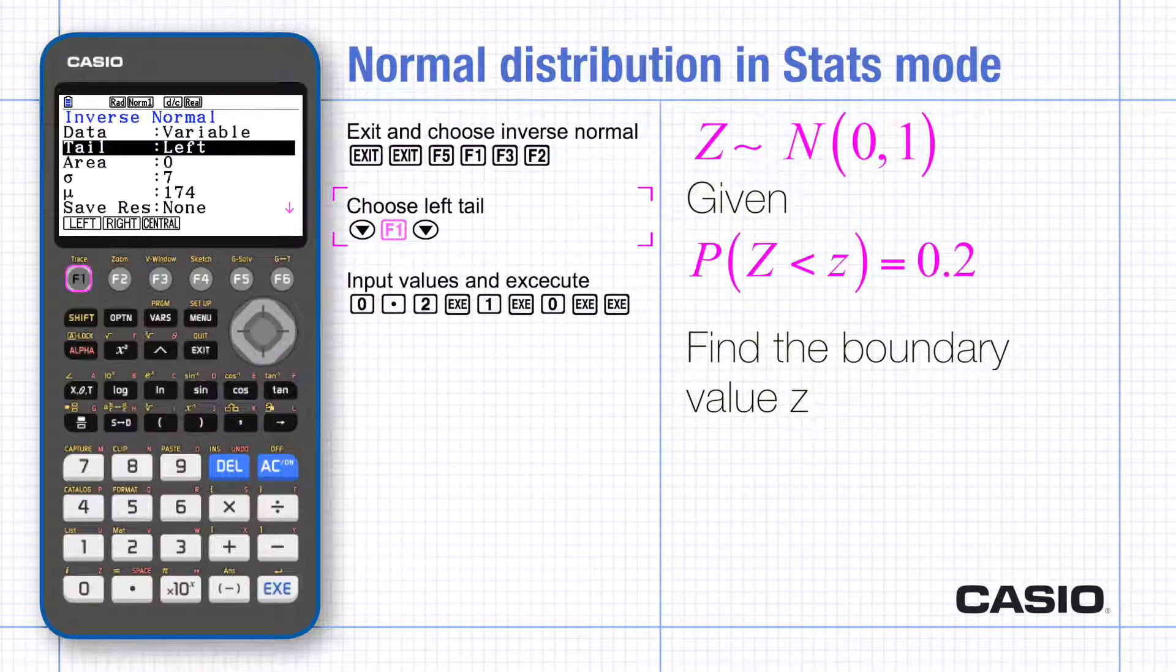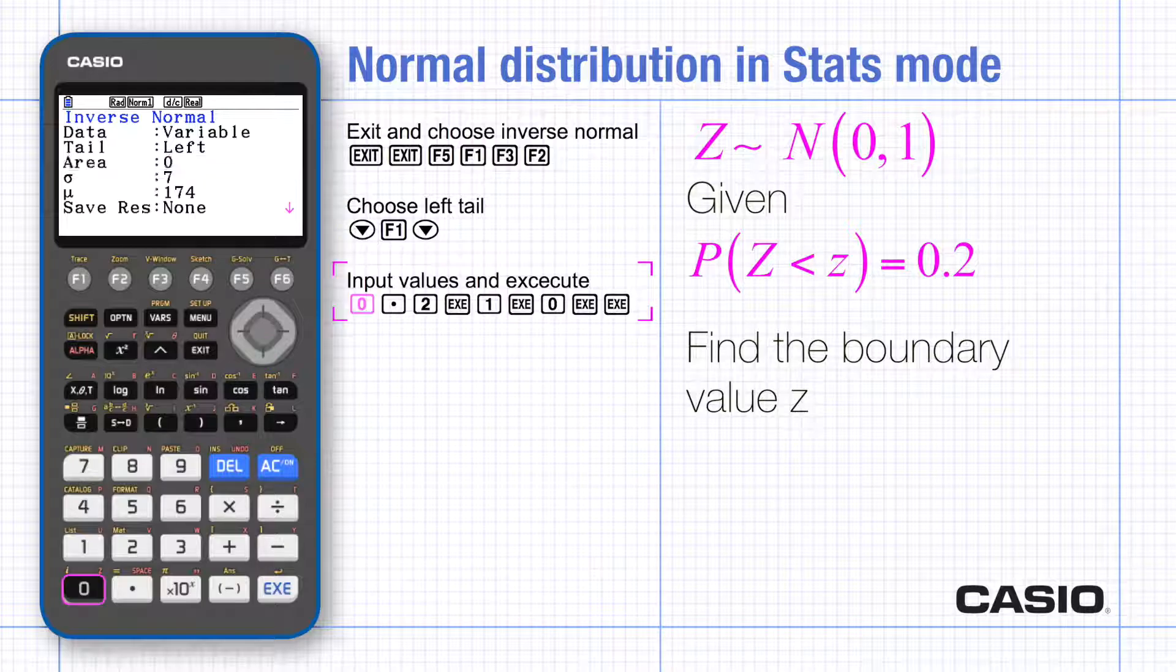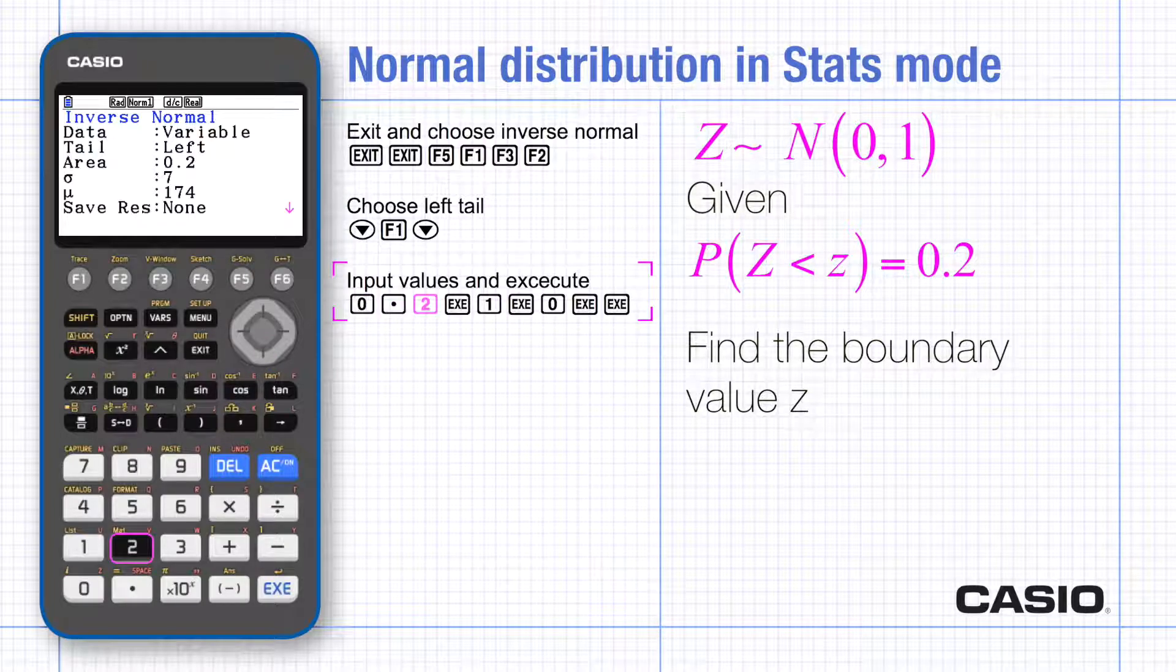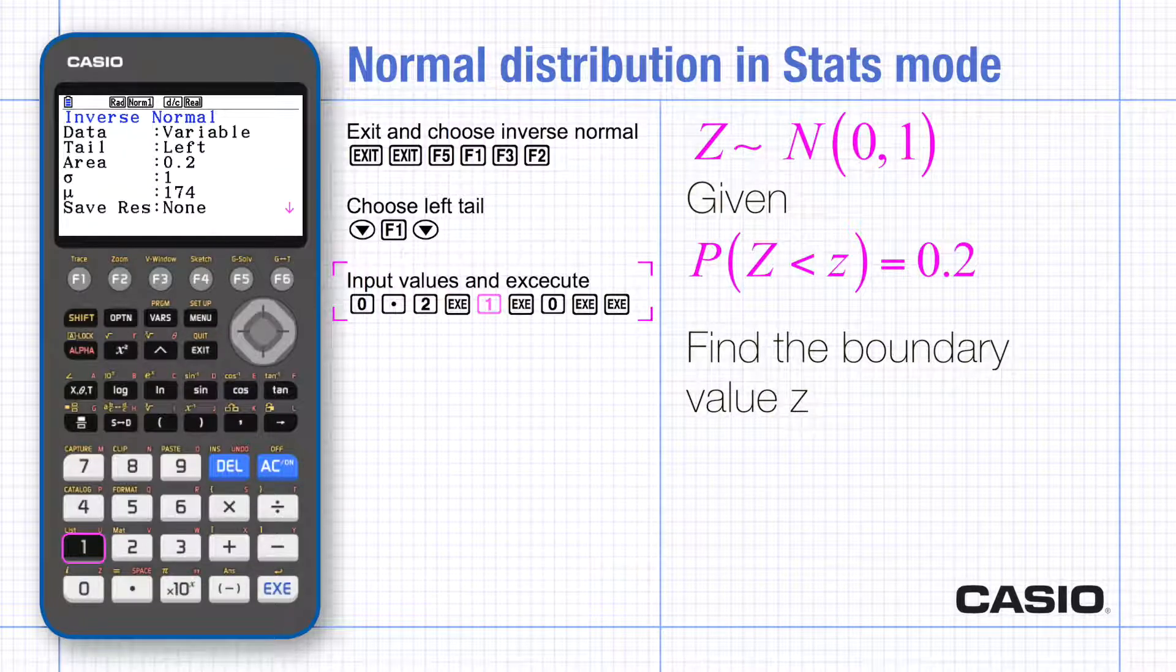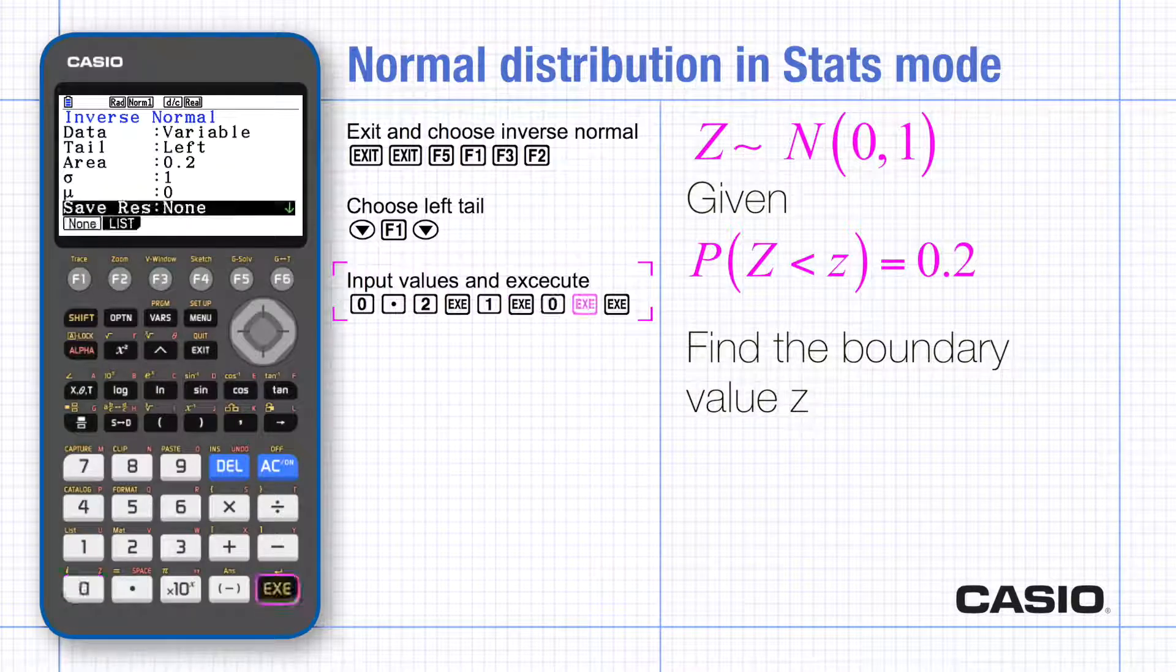Input the area, that's the probability value. Input the standard deviation, the mean and execute. And now the boundary value is given.